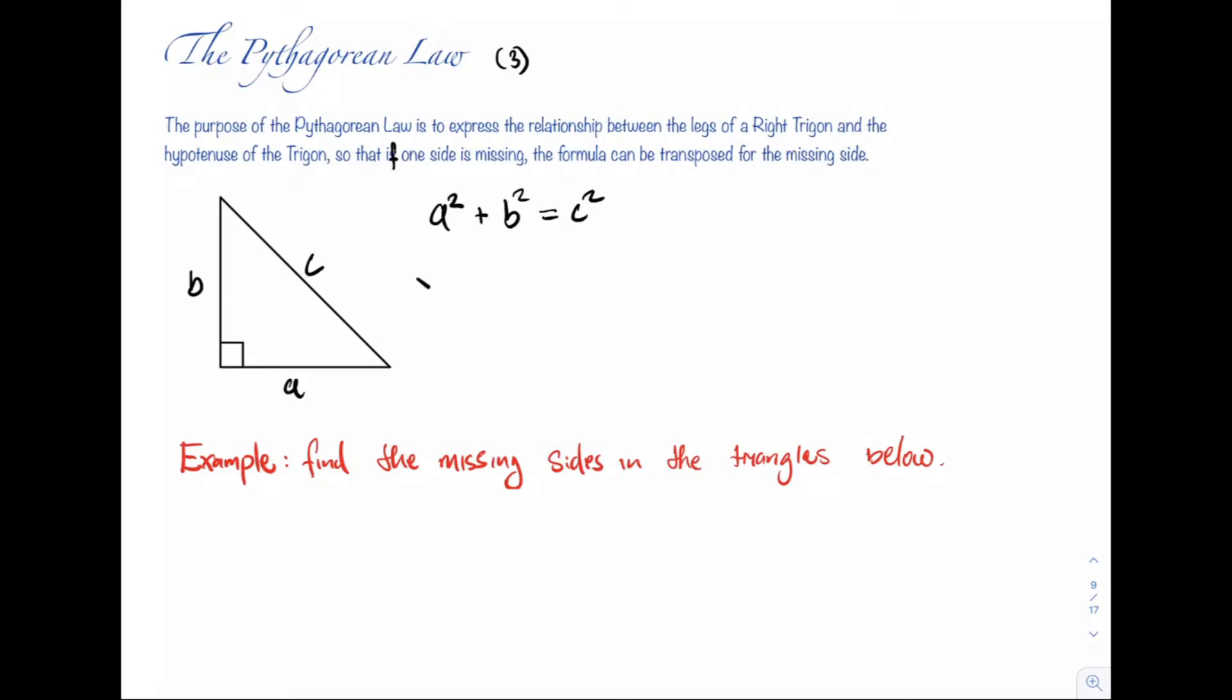If we're solving for C, then we take the square root of both sides which leaves us with the square root of A square plus B square equals C. Sometimes we'll have to transpose for one of the legs. The two perpendicular sides are referred to as the legs of the trigon. So here the legs are A and B and C is the hypotenuse. B is equal to the square root of C squared minus A squared. This is something that we can recall whenever we're solving similar types of problems. A is equal to the square root of C squared minus B squared. Once we recall these formulas, we can use them straight just like that.